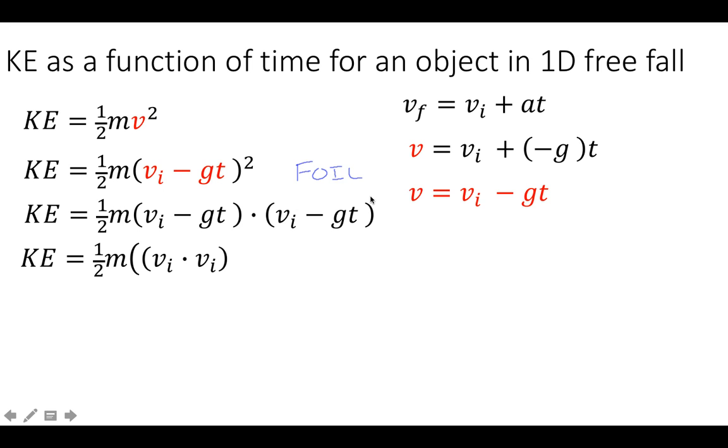First we're going to multiply the first terms, so vi times vi, then we'll multiply the outer terms, so vi times negative gt. Now we'll do our inner terms, that's negative gt times vi.